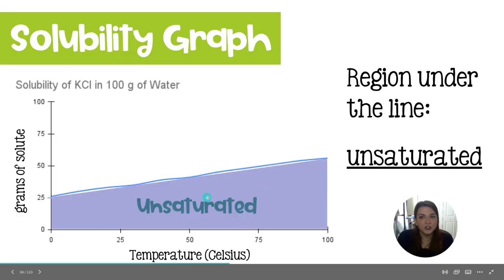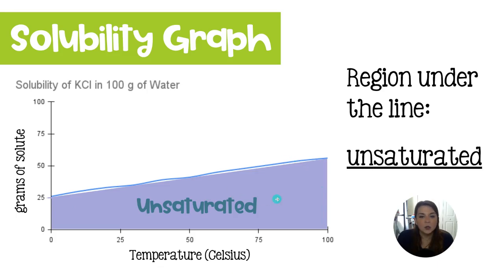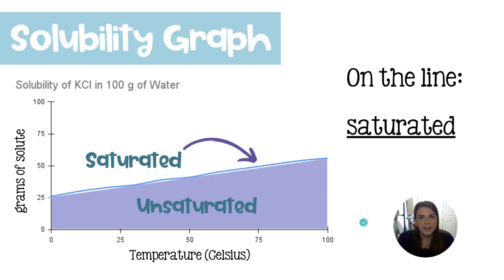Now this entire region underneath the line is going to represent an unsaturated solution of potassium chloride. Meaning that on this line, that is where the solution is saturated. So of course, anything below that would be unsaturated. Again, the data points that build the line represent the solution freshly saturated.